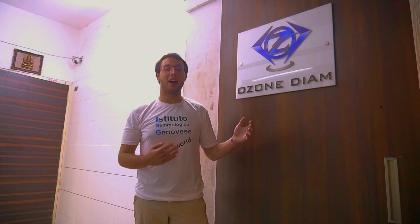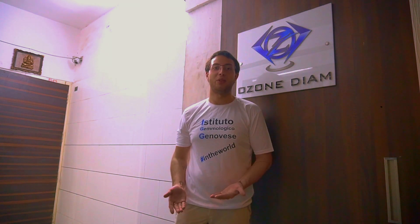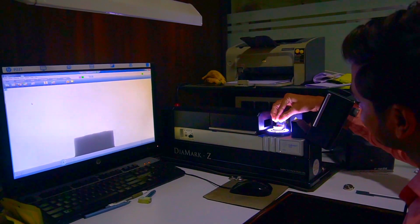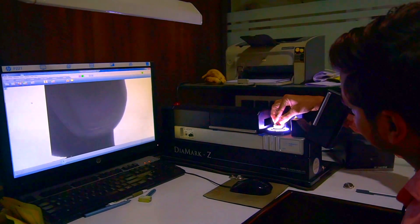Here we are in India in Surat, in front of the door of Ozan Diamond, a prestigious diamond cutting center which hosted us, the Gemological Institute of Genoa, Italy, to show us the whole diamond cutting process. Now we'll cross the threshold of this door to see how diamonds are cut.